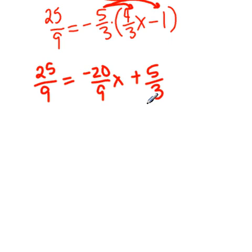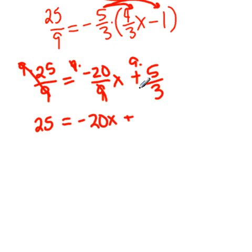Now, from here, we're going to clear fractions by multiplying each term by the common denominator. In this case, 9, 9, and 3. The common denominator is 9. So, multiplying everything by 9. You want to put them in parentheses. That's fine. Notice here, it cancels. So, I'm left with 25. Here, it also cancels. So, equals a negative 20x. Plus 9 divided by 3 times 5. So, 9 divided by 3 is 3. 3 times 5 is 15.